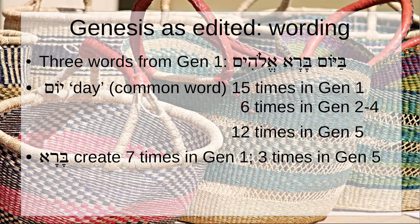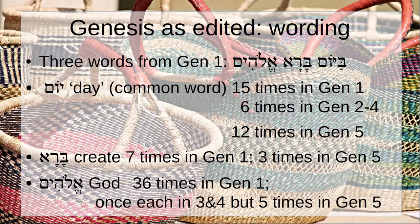'Barah,' meaning 'create,' occurs 7 times in chapter 1, the last of which is in chapter 2 verse 4, and then the next time it occurs is in chapter 5, where it occurs 3 times. 'Elohim,' meaning 'God,' occurs 36 times in chapter 1 verse 1 through to chapter 2 verse 4, and then — apart from the combined form 'Yahweh Elohim' (Lord God) — it only occurs once more in chapter 3, once in chapter 4, but 5 times in chapter 5. And just to round it out, the word 'Demut,' meaning 'likeness,' is only used 3 times in Genesis — in chapters 1 and 5.